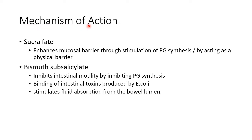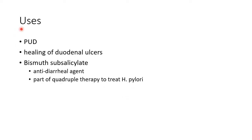Now let us see about the mechanism of action of these drugs. Sucralfate enhances the mucosal barrier through stimulation of prostaglandin synthesis and also acts as a physical barrier to gastric acid. Bismuth subsalicylate inhibits intestinal motility by inhibiting prostaglandin synthesis, causes binding of intestinal toxins produced by E. coli, and stimulates fluid absorption from the bowel lumen.